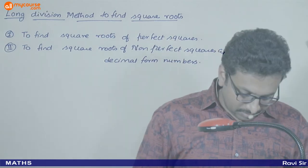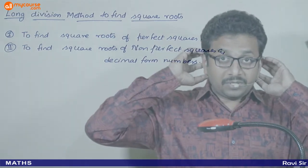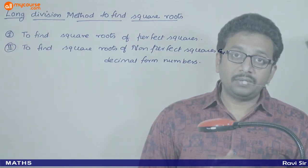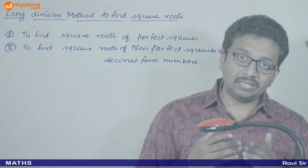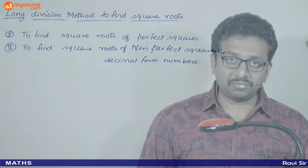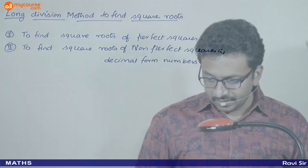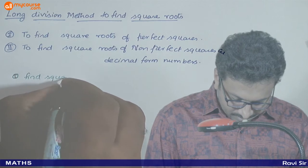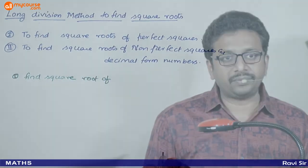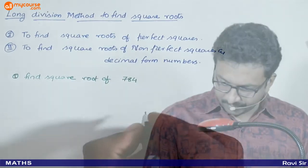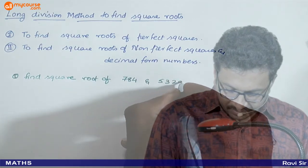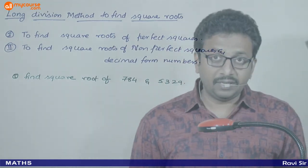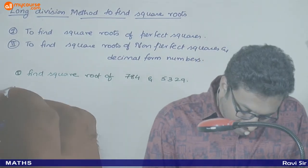Now let us take an example. This long division method is not exactly the same as regular division, but there is some similarity. First question: find the square root of 784 and 5329. These two numbers' square roots need to be found using the long division method, not prime factorization this time.